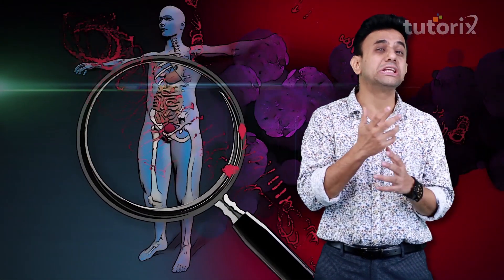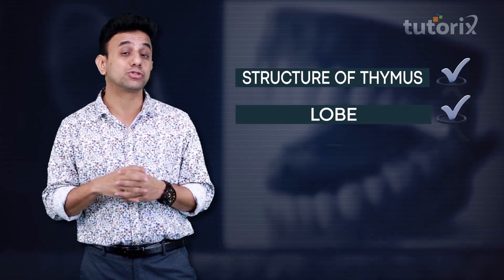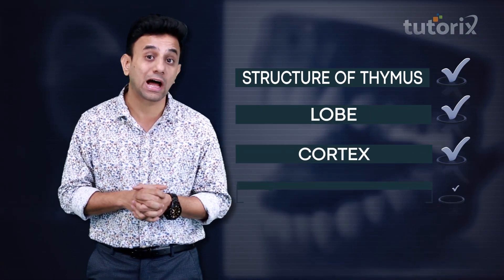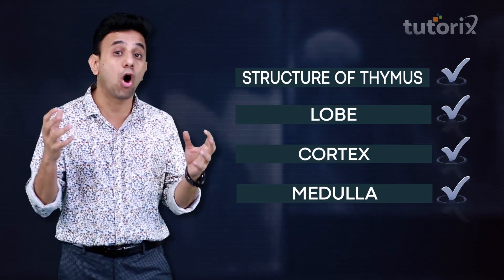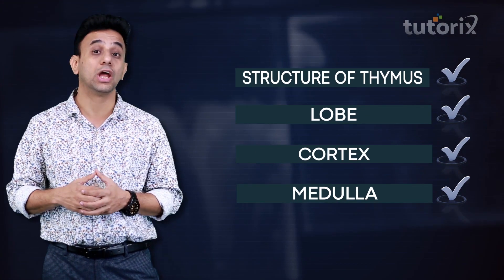We are done with the thymus gland — we talked about its structure, its lobes, the outer cortex and inner medulla, and its role in producing hormones as well as contributing to immunity. Let's now summarize the important points.